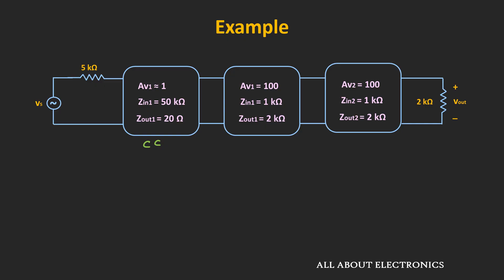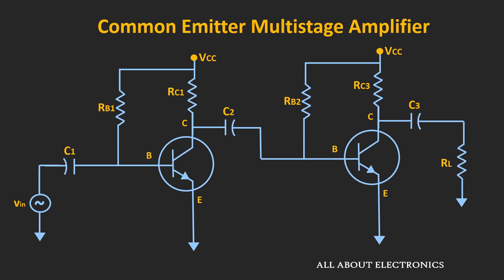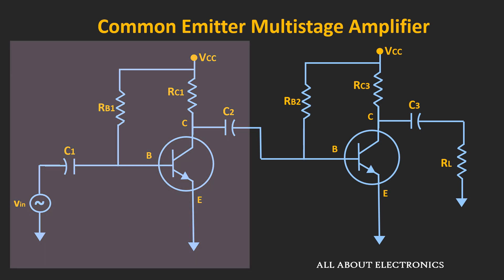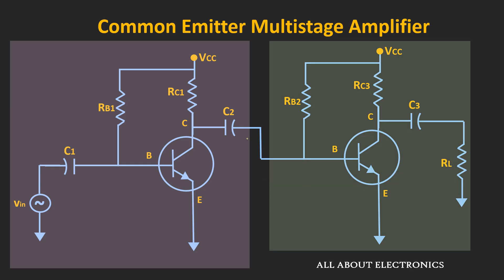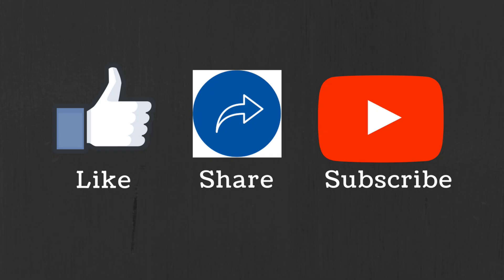Try to find the overall voltage gain of this multistage amplifier system once we add the emitter follower at the beginning, and let me know your answer in the comment section. Before ending this video, here is the circuit of two common emitter amplifiers cascaded together — the first and second common emitter stages coupled through a capacitor. I hope you got an overview of multistage amplifiers and understood how multiple amplifiers can be cascaded. If you have any questions or suggestions, let me know in the comments below. If you liked this video, hit the like button and subscribe for more such videos.